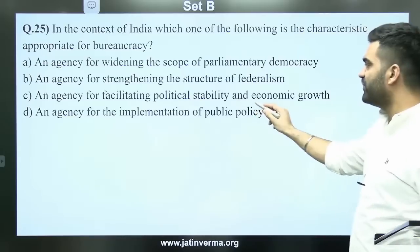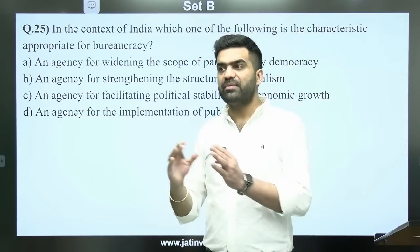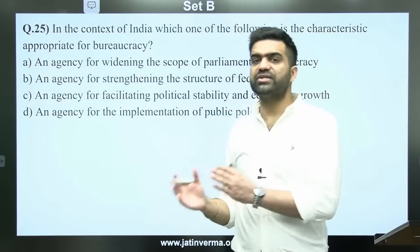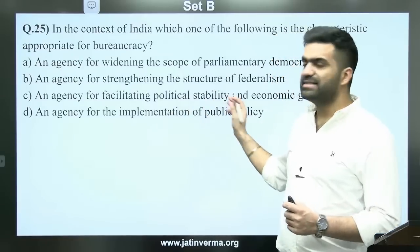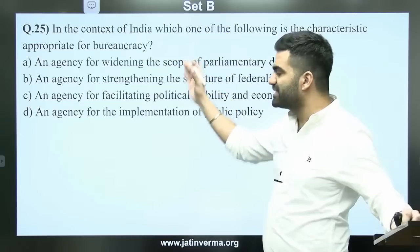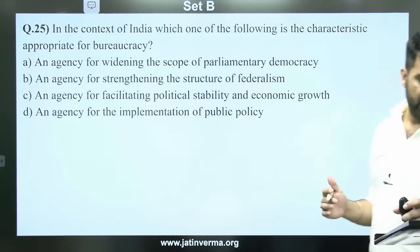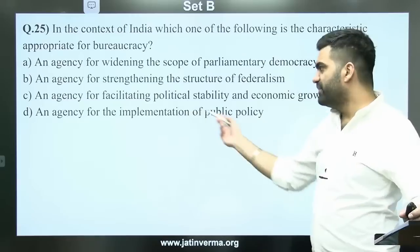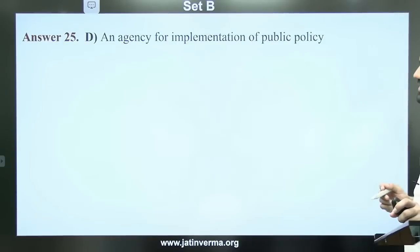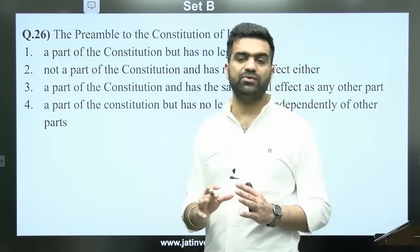Agency for facilitating political stability is also equally correct, because during five-yearly elections, bureaucracy maintains political stability by facilitating transitions — for example, from Congress government to BJP government. However, the official answer key will clarify whether it is C or D. About 7–10 questions every year are ones where only UPSC knows the correct answer.